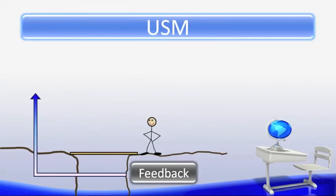The final step in the USM is feedback. We obtain feedback throughout the entire system. However, most of the feedback occurs in the processing and the output stages. We find out if we need to go back to the drawing board and come up with a new solution to our stated problem, or just make revisions to our solution, or if our solution worked out great for us.